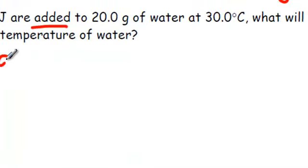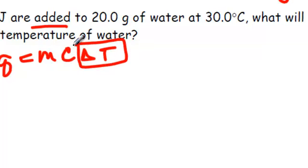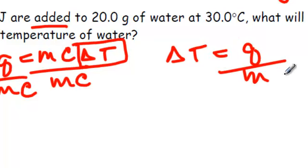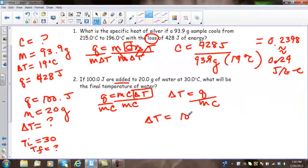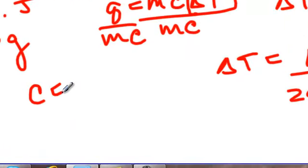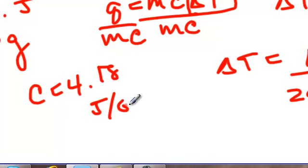So, looking at my formula, Q equals MC delta T. If I'm solving for delta T, this is multiply. I'm going to divide both sides by MC. So, delta T is equal to Q divided by MC. So, delta T is equal to my Q, which is 100 joules, divided by my mass, which is 20 grams, divided by, oh, I didn't write down my specific heat. This is water, so it's the constant, 4.18 joules per gram dot Celsius.